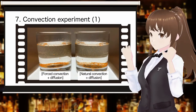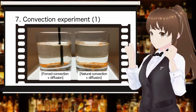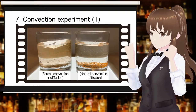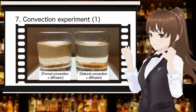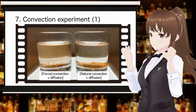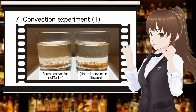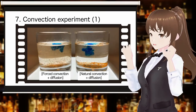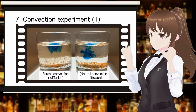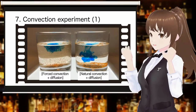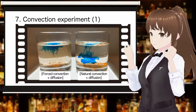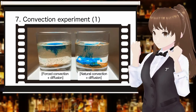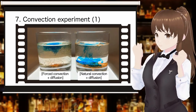We will try an experiment to confirm the difference in mixing due to convection. The glass is filled with chili pepper to make it easier to see the flow of the liquid. The left side of the screen shows mixing by forced convection and diffusion, while the right side shows mixing by natural convection and diffusion. There does not seem to be a significant difference in mixing speed between natural and forced convection. Why is this?